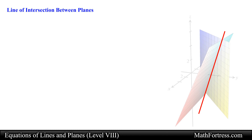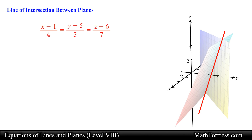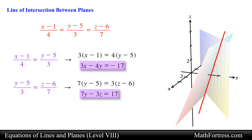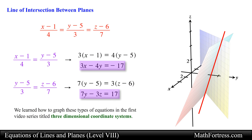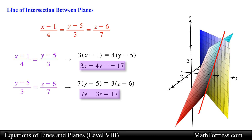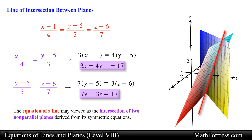For example, if we take the following symmetric equations of a line and split it into two equations, we would obtain the equation of two separate planes. We can write these equations into a graph-friendly form. Recall that we learned how to graph these types of equations in the first video series titled 3-dimensional coordinate systems. If we were to graph these two planes in space, then the intersection between these two planes will be along a line. The equation of a line may be viewed as the intersection of two non-parallel planes derived from its symmetric equations.